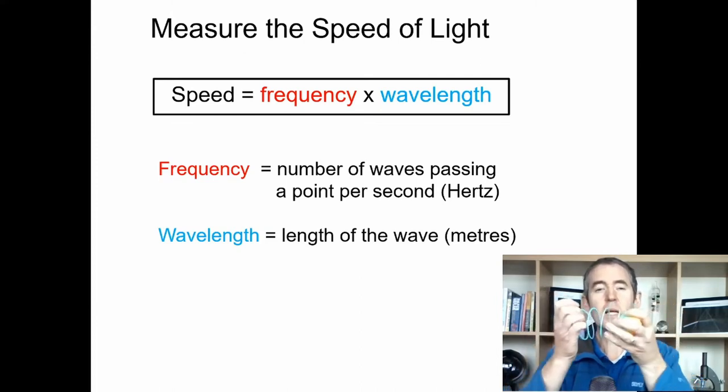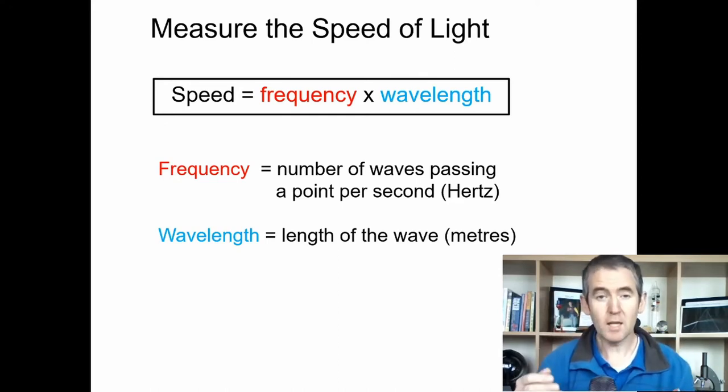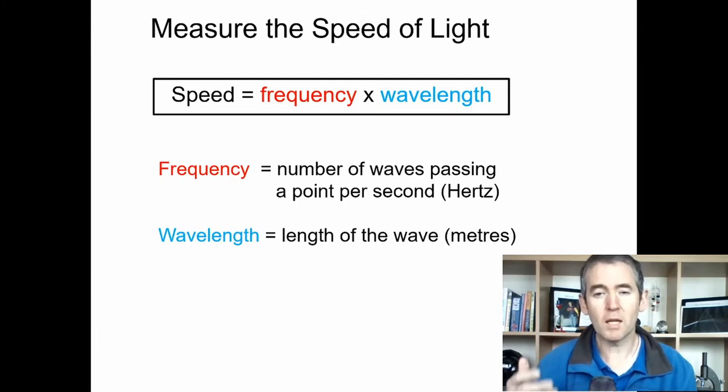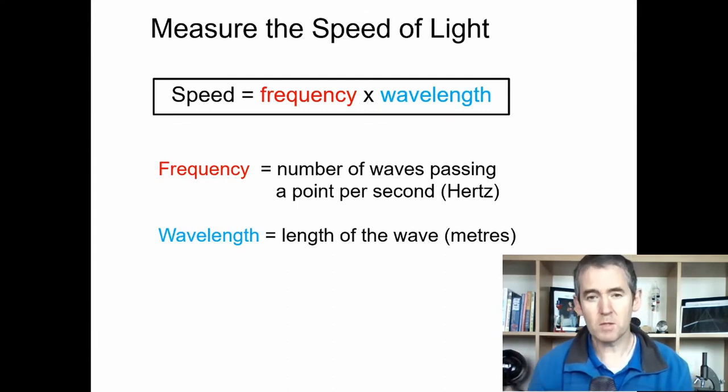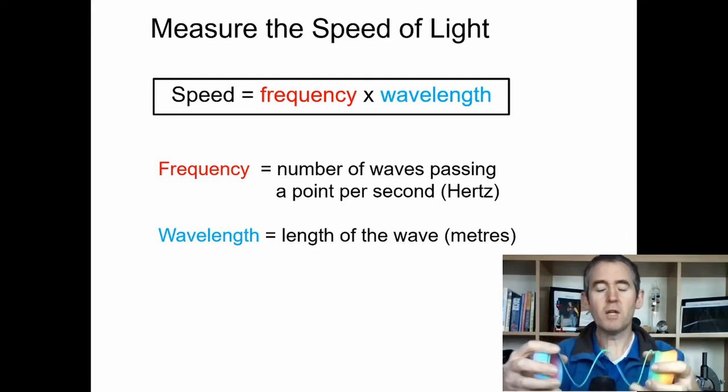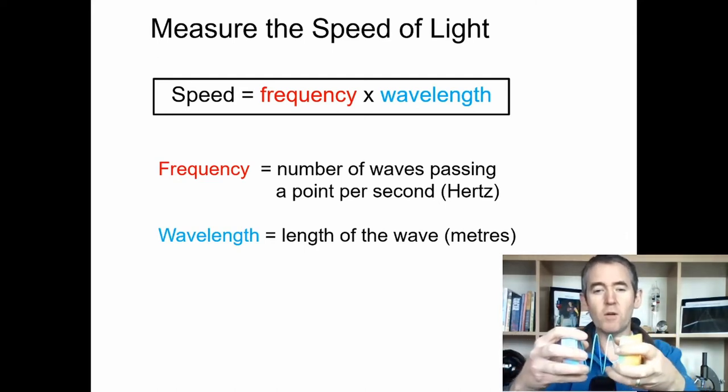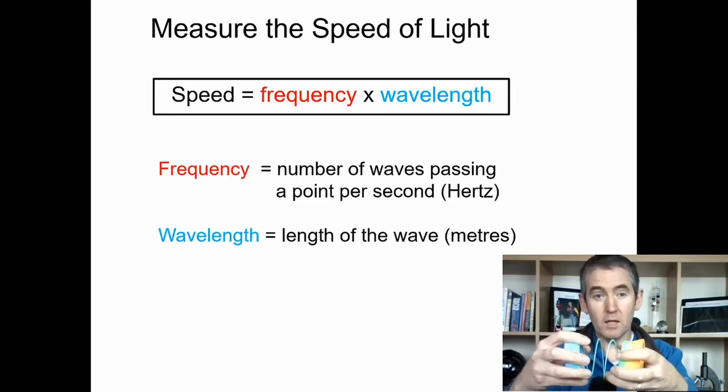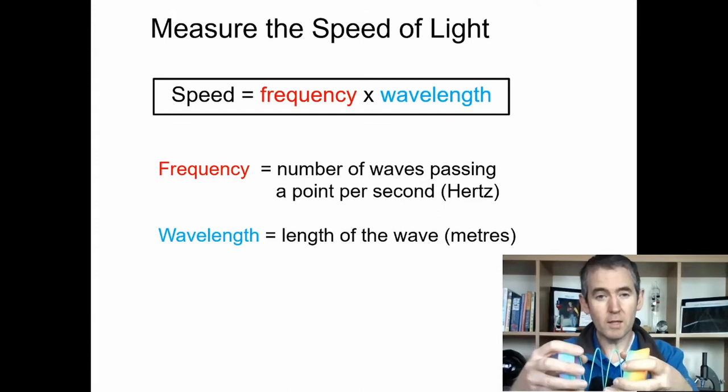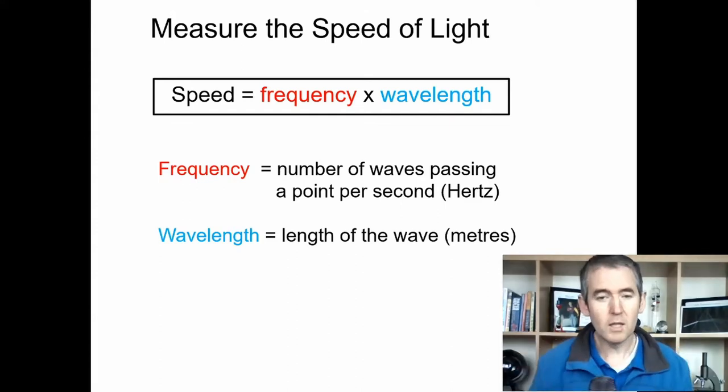The speed of light for visible light is the same as the speed of a microwave. All electromagnetic radiation, which is microwaves and light, travel at the same speed. Visible light, which is a smaller wavelength than microwaves, will have a higher frequency. They have to equal the speed of light.